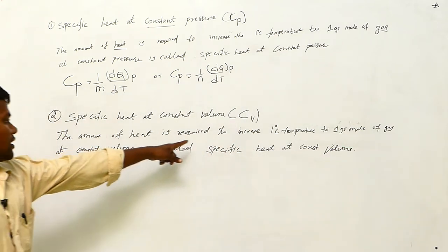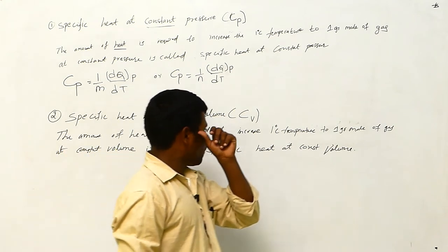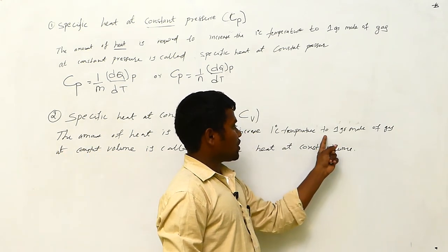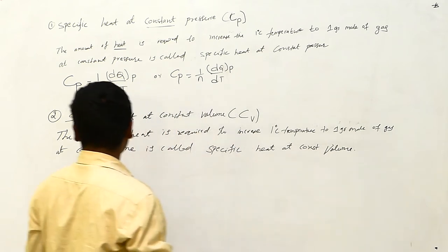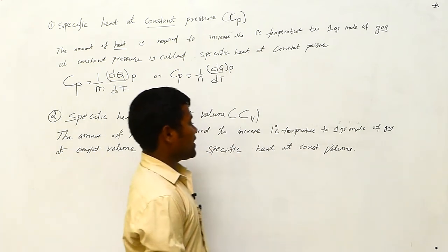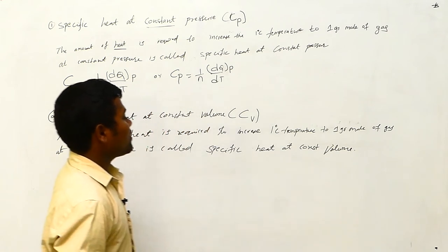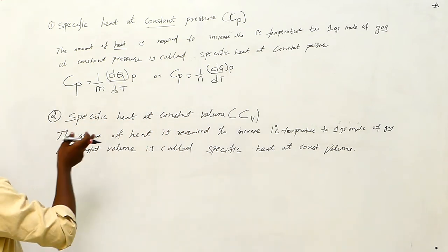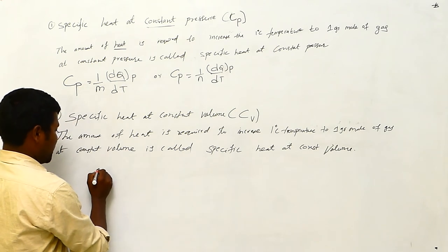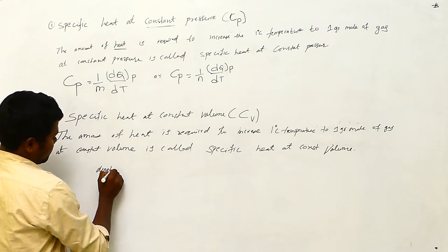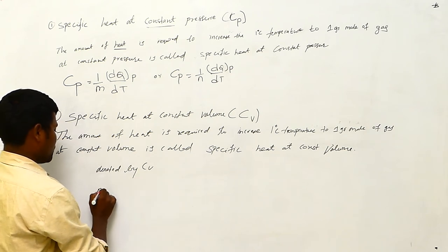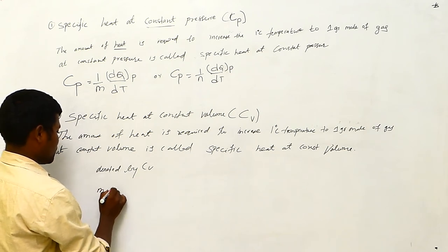...for one gram mole of gas at constant volume is called specific heat at constant volume. It is denoted by C_V. Now the mathematical formula for C_V.